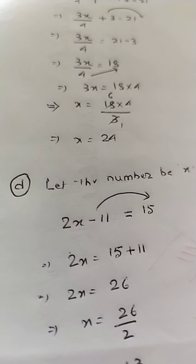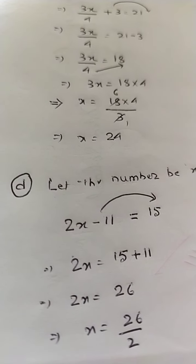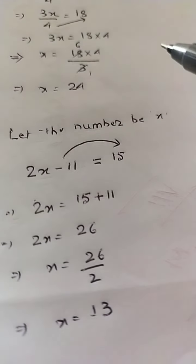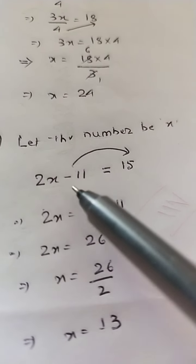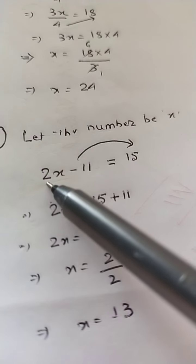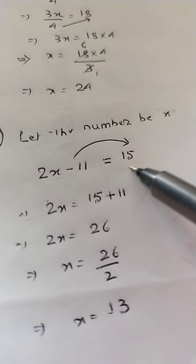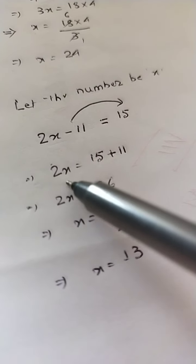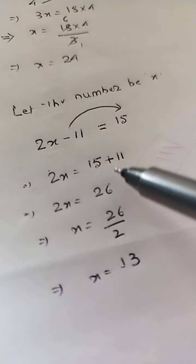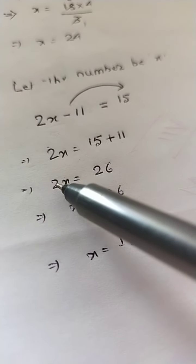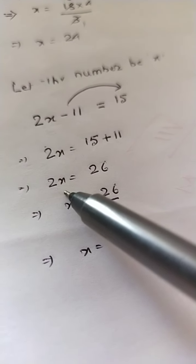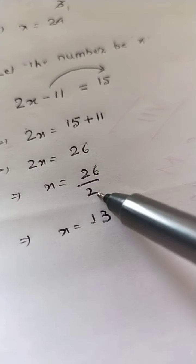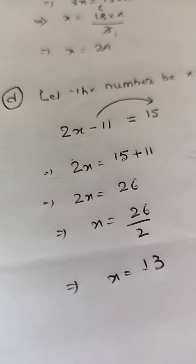Sum number (d): When I subtract 11 from twice a number I get 15. Let the number be x. The equation is 2x − 11 = 15. Transpose −11 to the right hand side; it becomes +11: 2x = 15 + 11 = 26. Divide both sides by 2: x = 26 ÷ 2 = 13.